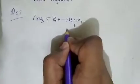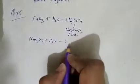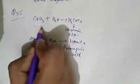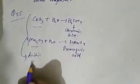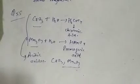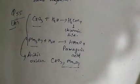Question number 55: a group of acidic oxides. When CrO3 reacts with water it forms chromic acid, and when Mn2O7 reacts with water it forms HMnO4, that is permanganic acid. Since these oxides react with water to form acids, they are acidic oxides. Question number 55, option A is correct.